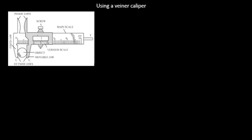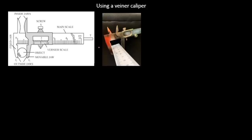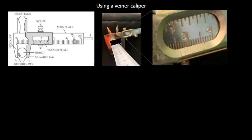Let us measure the breadth of the meter rule. We place the vernier caliper at the edges of the meter rule. Zooming in, we can see the main scale with values 3 and 4, and the vernier scale with 0 through 10. If this is 3, then this line before it is 2.5. So just after 2.5 we see 2.6 on the main scale. The first reading from the main scale is therefore 2.6.